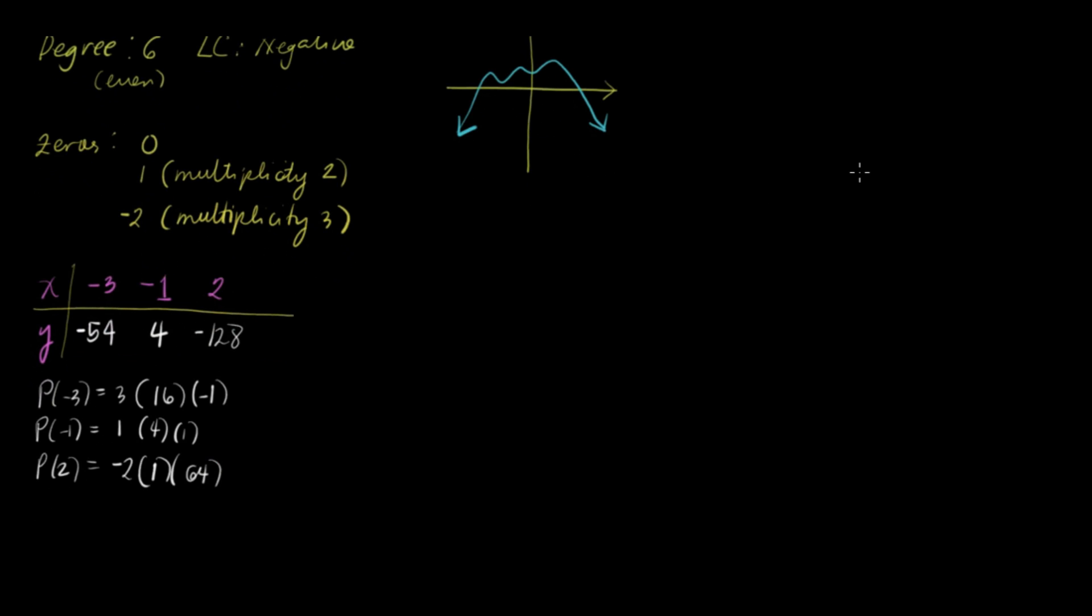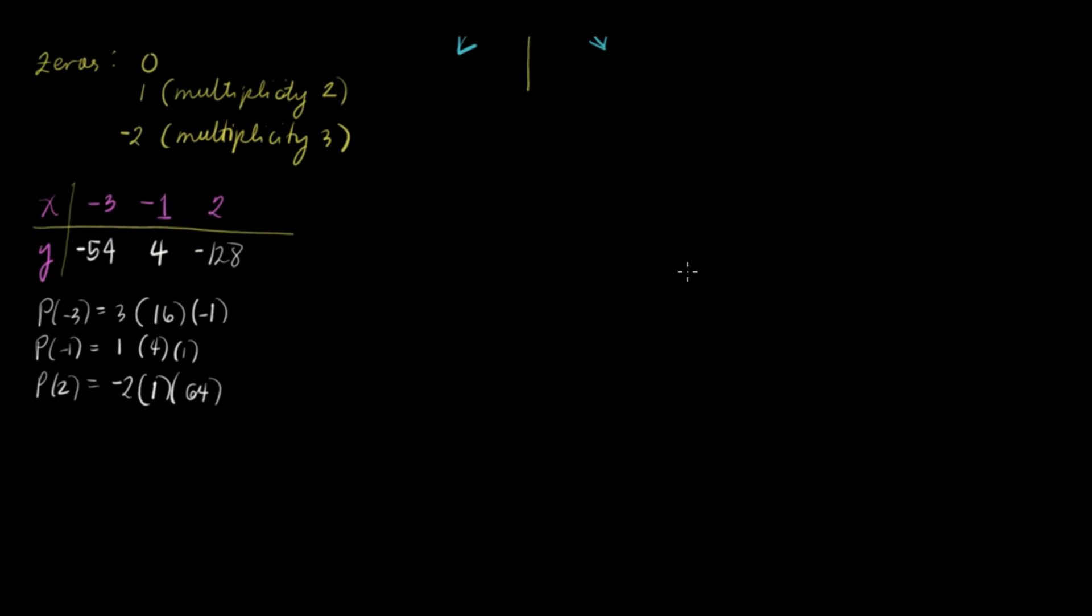So, we're now ready to plot, or to sketch the graph. So, this is your y-axis, and this is your x-axis. Then, let's plot first the zeros. We have a zero at zero, and then one. So, we have negative one, and then we have negative two. Negative two, negative three. So, we have negative two.